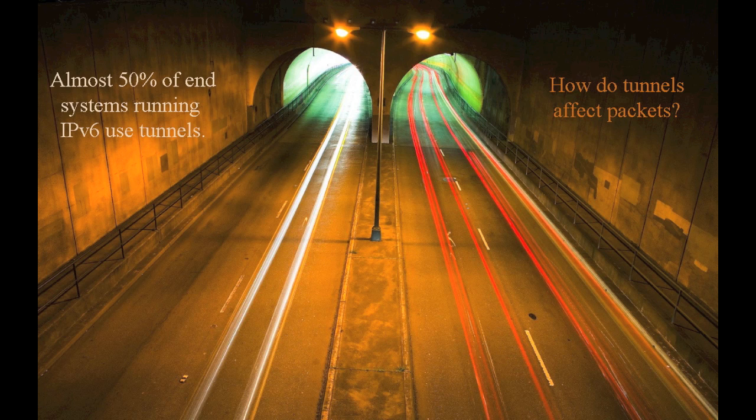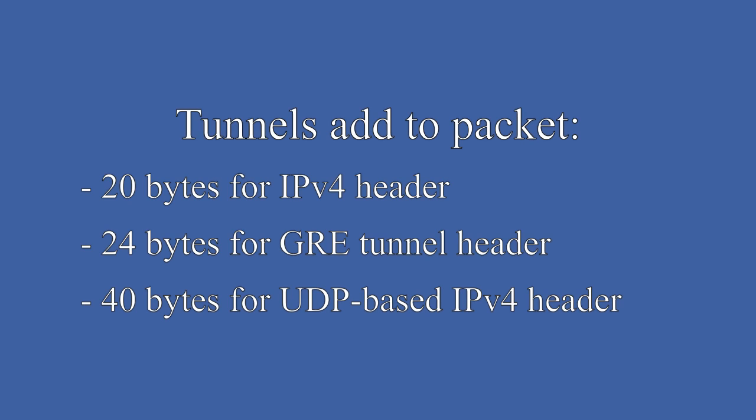Nearly 50% of end systems running IPv6 use auto tunneling, so it's important to pay attention to how tunnels affect packets. An IPv6 tunnel adds an additional 20 bytes to a packet for an IPv4 header, 24 bytes for a GRE tunnel header, or 40 bytes for a UDP-based v4 header.